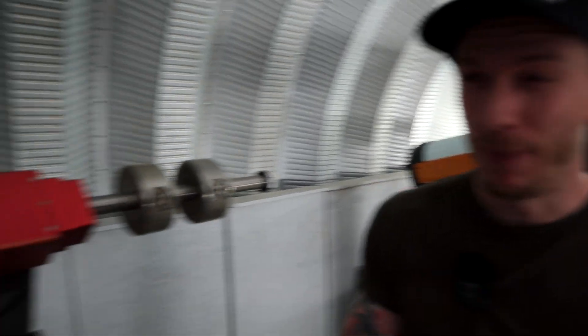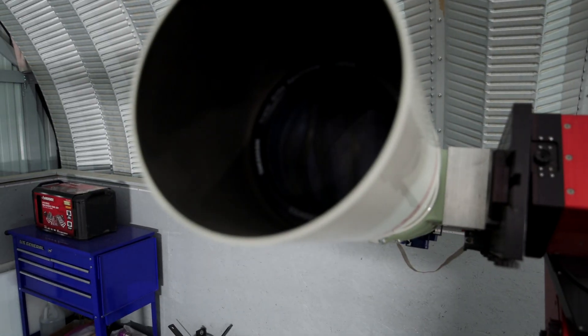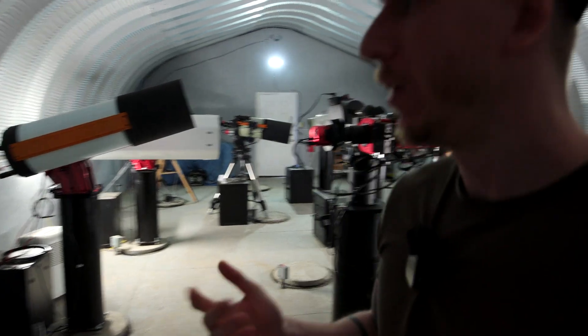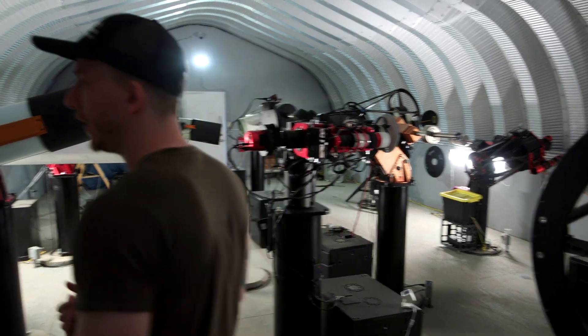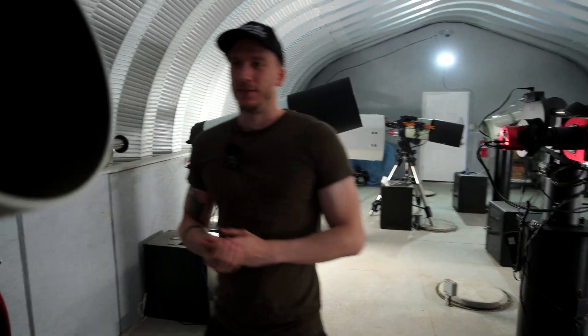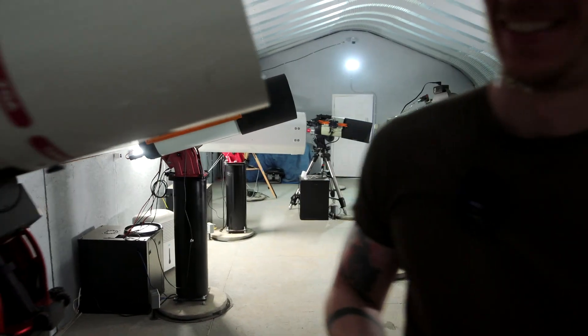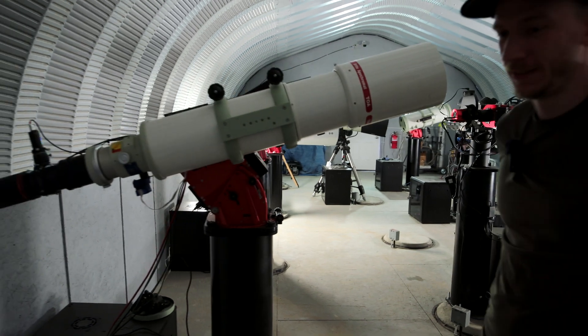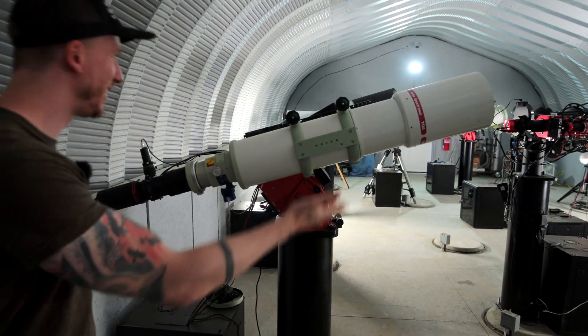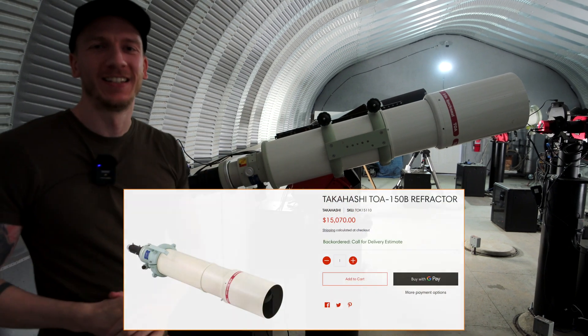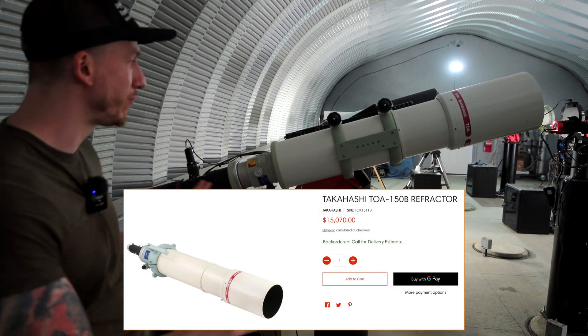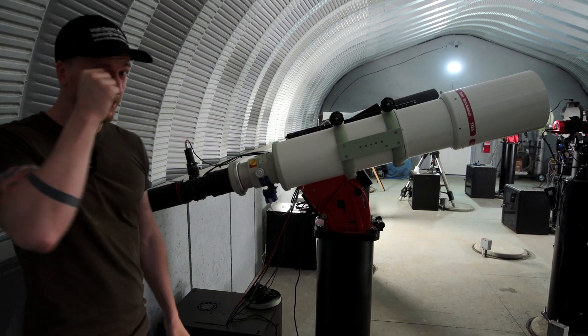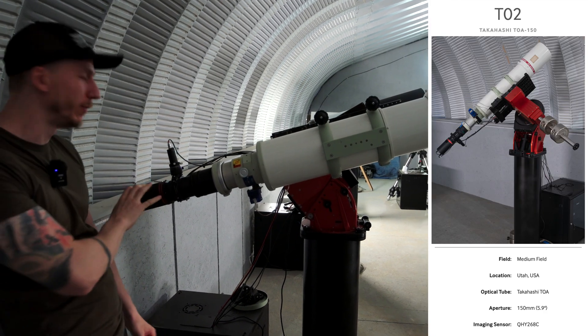Now on your left though there is I think the biggest of the refractors from Takahashi which is the TOA150 and once again on a Software Bisque mount. Let's say RIP for my arms holding up the camera right now. Comment and tell us if you feel bad for my arms. That's a job you know? So here there is the Takahashi TOA150, so big refractor telescope, also very huge for sure, with a QHY3 camera at the back here.